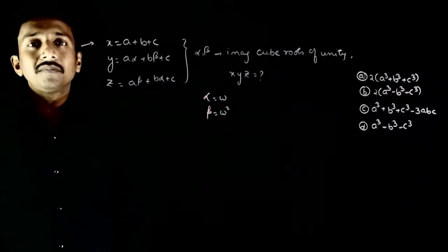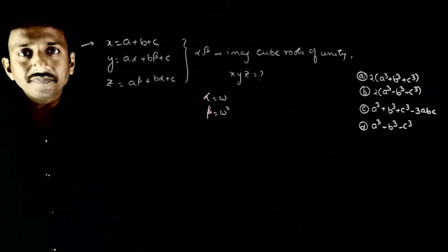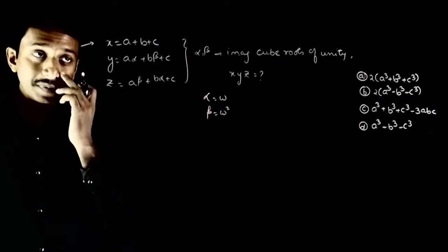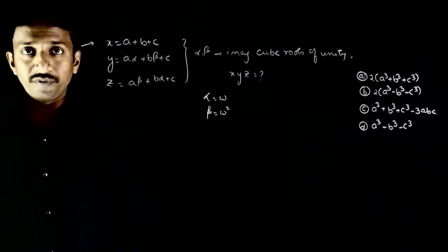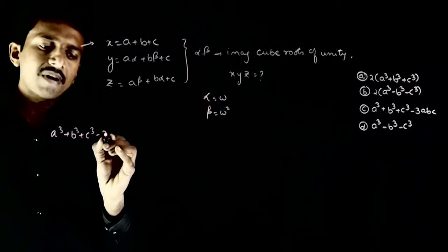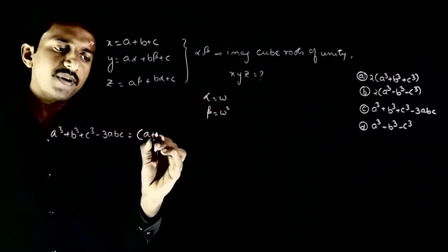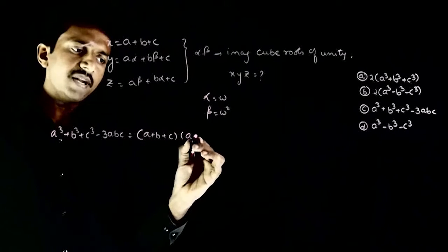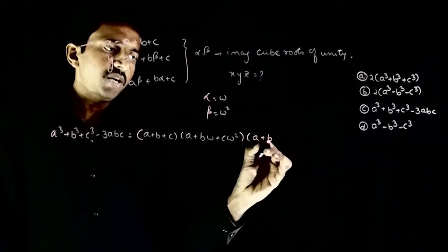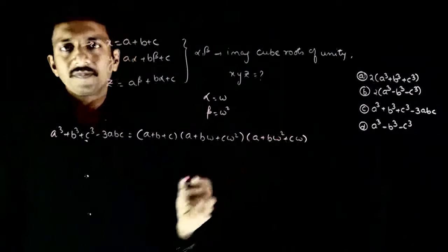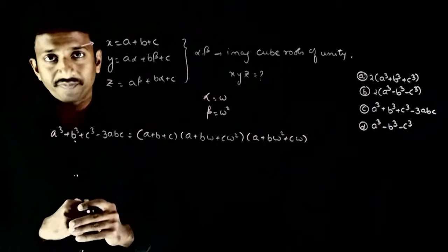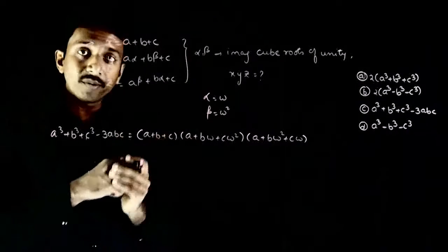To solve this question, hum ek formula yaad karenge. This formula is available in all standard textbooks — it is a factorization using complex cube roots of unity: a cube plus b cube plus c cube minus 3abc is equal to (a plus b plus c) into (a plus b·omega plus c·omega square) into (a plus b·omega square plus c·omega).